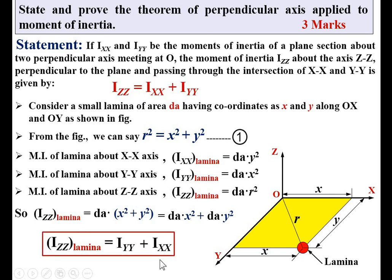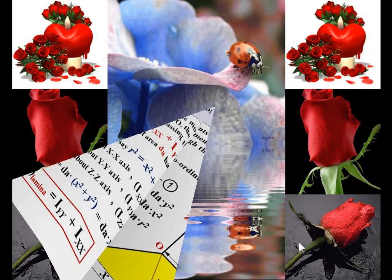To summarize: I_ZZ = I_XX + I_YY, and I_ZZ is sometimes known as the polar moment of inertia. Now you can remember the statement of the perpendicular axis theorem with reference to this figure. Thanks, my dear friends.